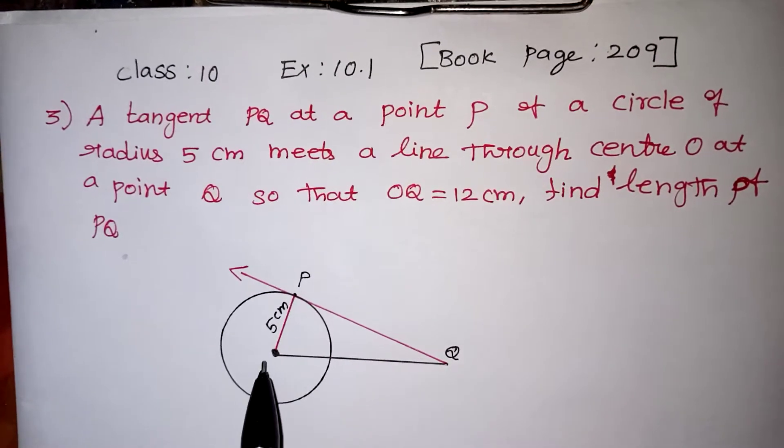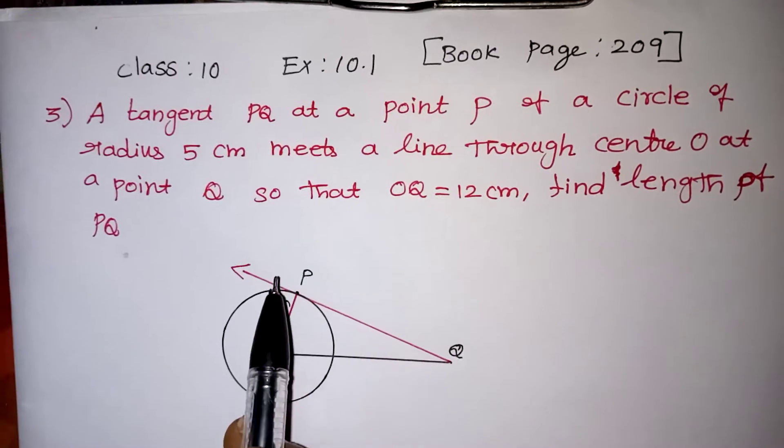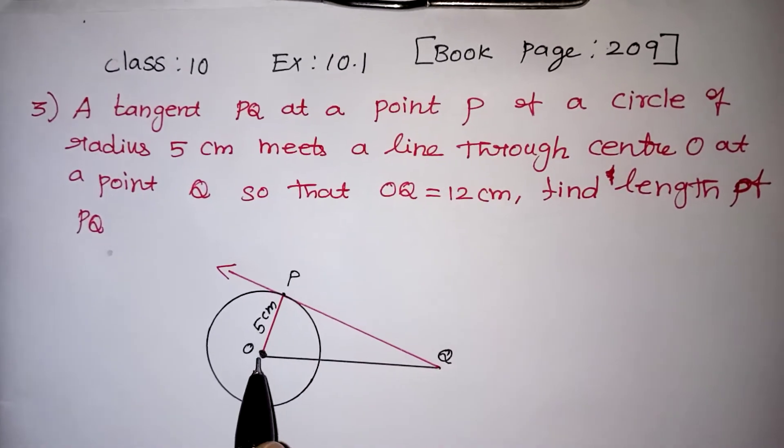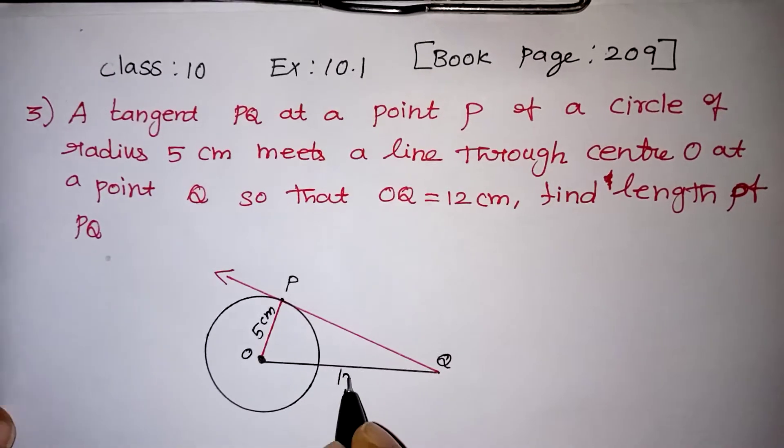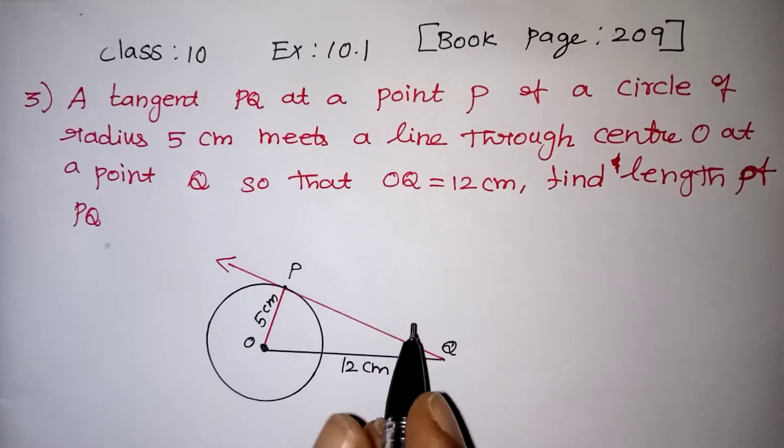The line through the center O - the center is named as O at the point Q. So OQ is 12 centimeters. From O to Q there is 12 centimeter length. Now find the length of PQ. PQ length we don't know.